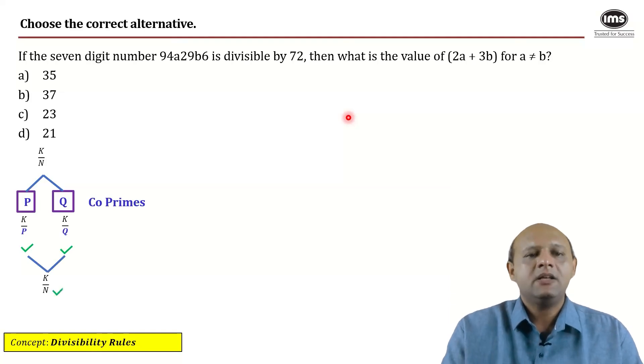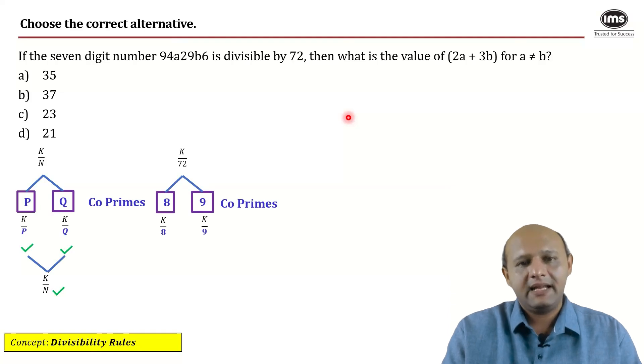Okay. So in case of 72, 72 can be written as a product of two co-primes as 8 times 9. If the given number is divisible by 8 and it is divisible by 9, only then it will be divisible by 72. Right? Now let us go ahead by checking either of the divisibility first. So if you decide to check the divisibility by 9, what is the divisibility rule?